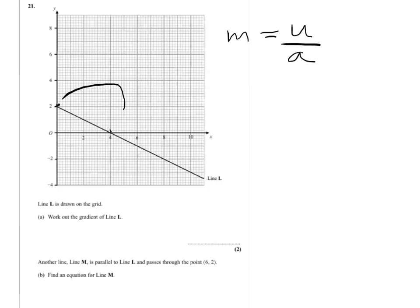So if I'm going from this point to this point, then I've gone down 2 and I've gone across 4. So this will give me a gradient of minus 2 over 4, which equals minus 1 half.